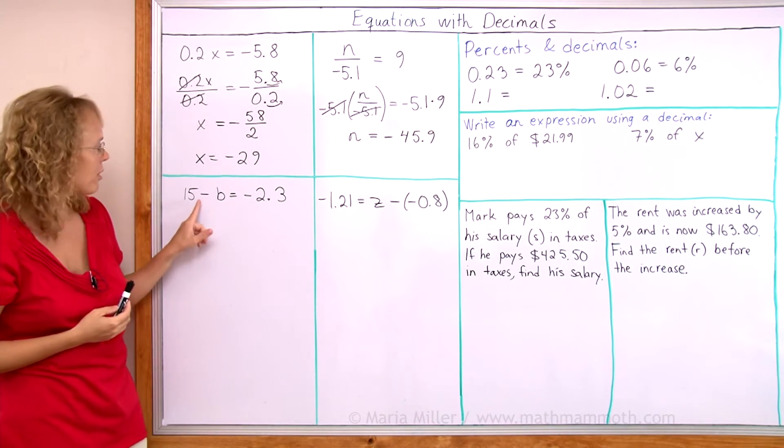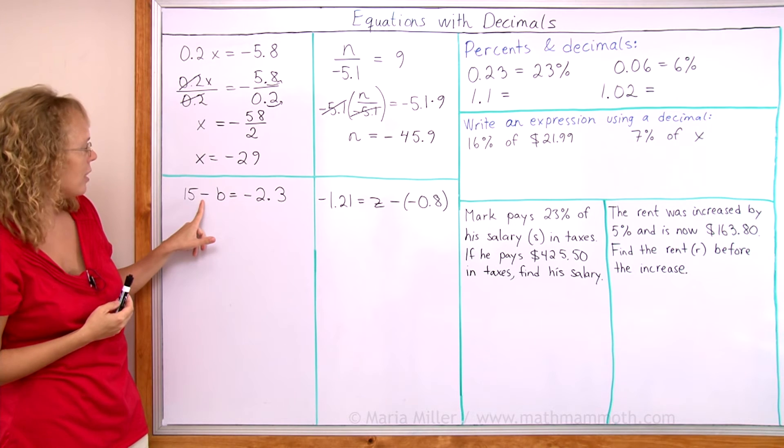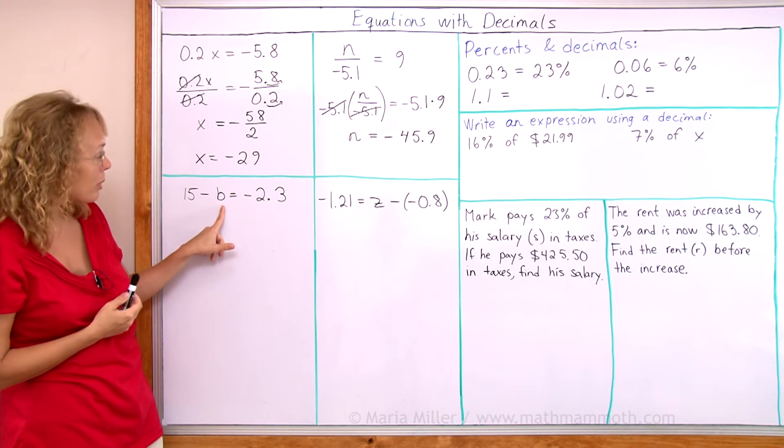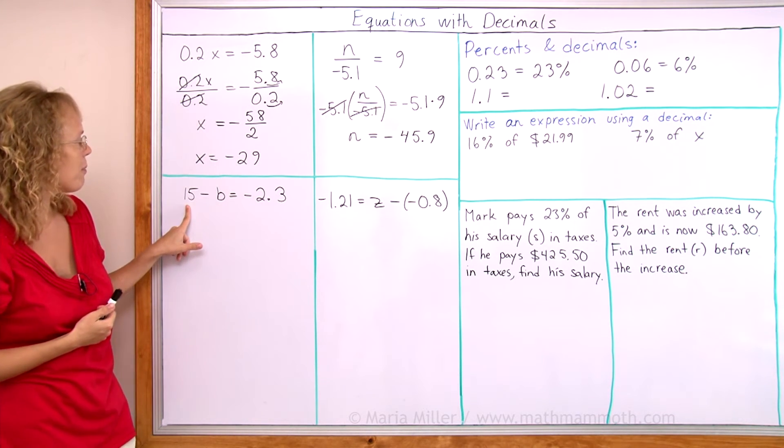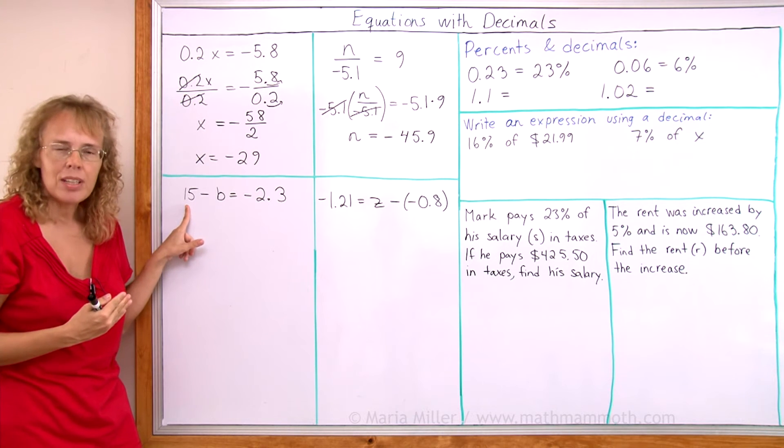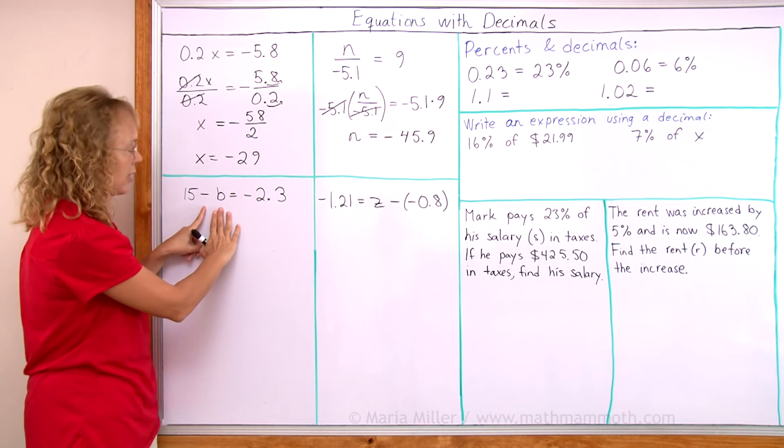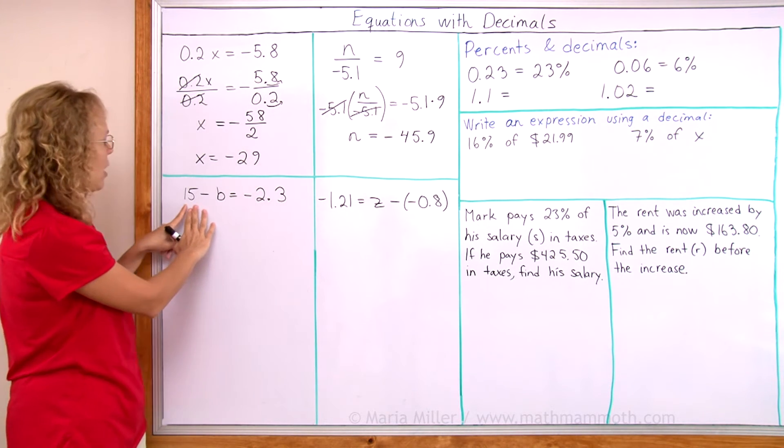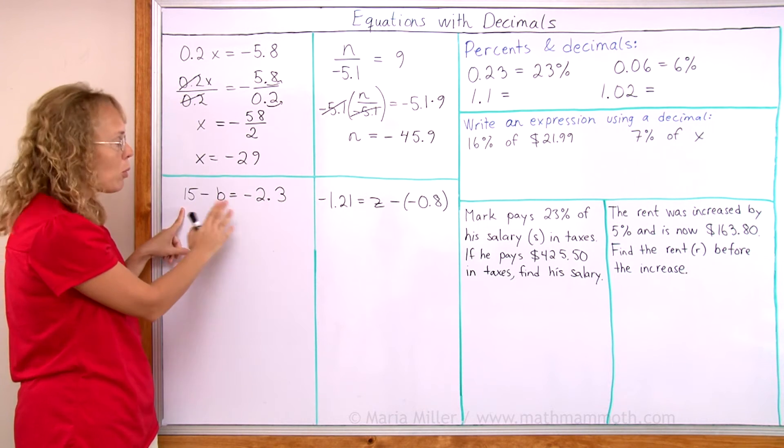Here we have the variable here as a negative, negative b or minus b. And then there's 15 here. 15 is added. So to isolate negative b here, then I would subtract 15 from both sides.